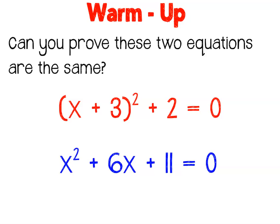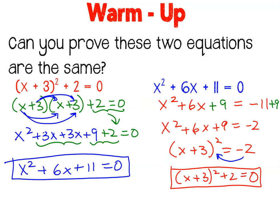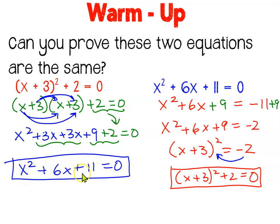There are actually two ways that you can prove these two equations are the same. You can manipulate the red equation to turn it into the blue equation, or you can do the reverse — manipulate the blue equation to turn it into the red equation. The red equation, which already has a factorization in it, would require you to double-distribute the square factor, resulting in x squared plus 3x plus another 3x plus 9. The plus 2 and the equals 0 gets rewritten from the original equation. After combining all the like terms, you'll get the blue equation: x squared plus 6x plus 11.